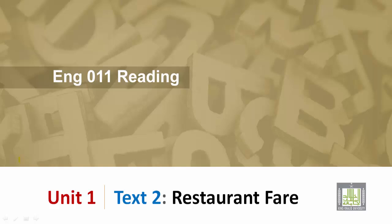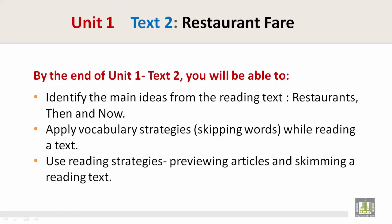English 011 Reading 1. Unit 1 Text 2: Restaurant Fair. By the end of Unit 1 Text 2, you will be able to identify the main ideas from the reading text 'Restaurants: Then and Now,' apply vocabulary strategies such as skipping words while reading a text, and use reading strategies such as previewing articles and skimming a reading text.